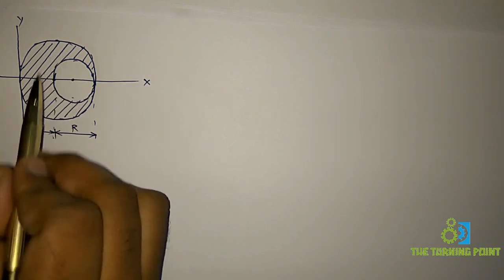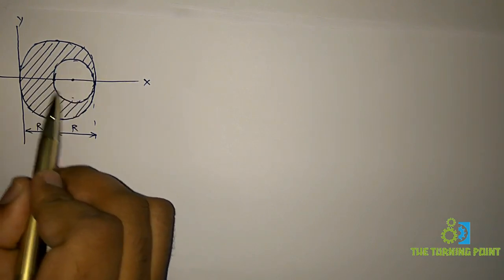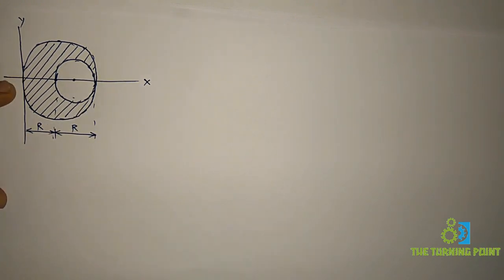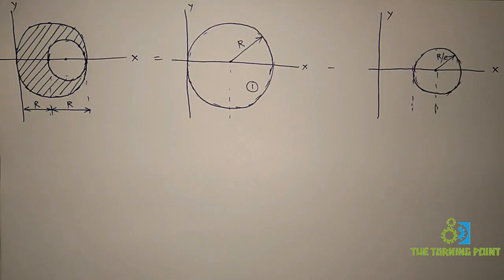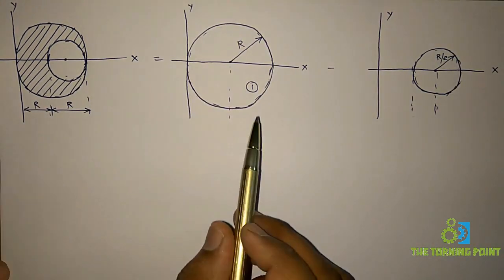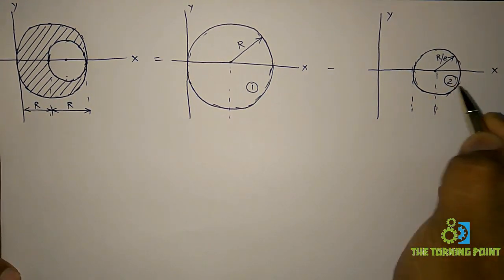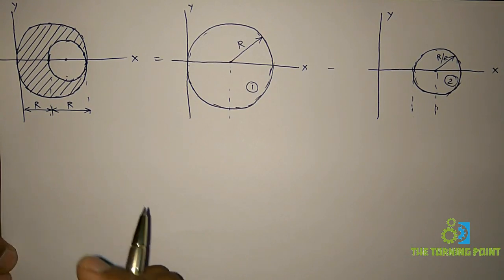So in order to get this shaded area, we have to subtract this circle from big circle. So I will represent it graphically now. So these are the two circles. If we subtract circle 2 from circle 1, we will get this shaded area. So just I will hatch those two.